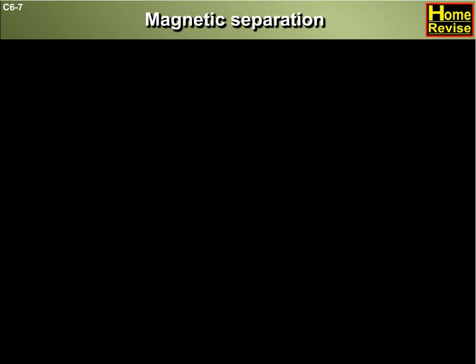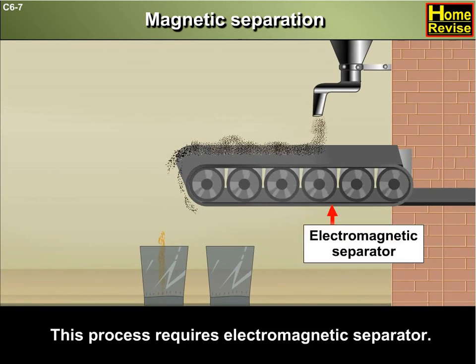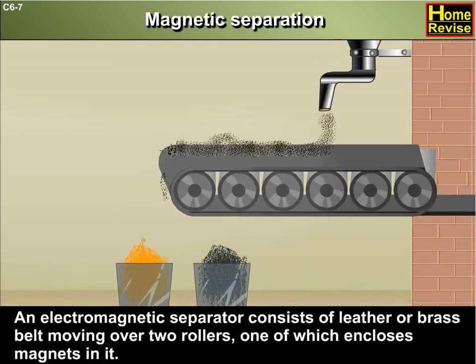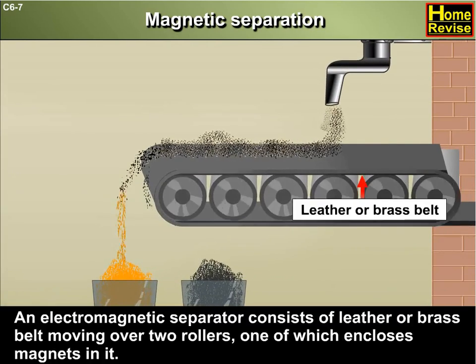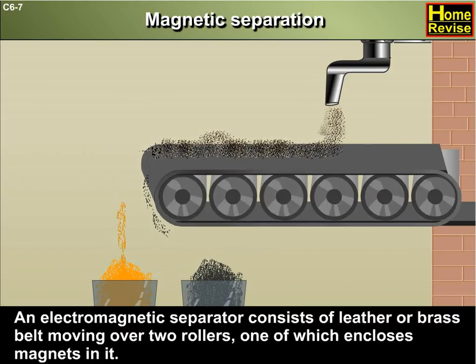Magnetic separation. This process requires an electromagnetic separator. An electromagnetic separator consists of a leather or brass belt moving over two rollers, one of which encloses magnets in it.